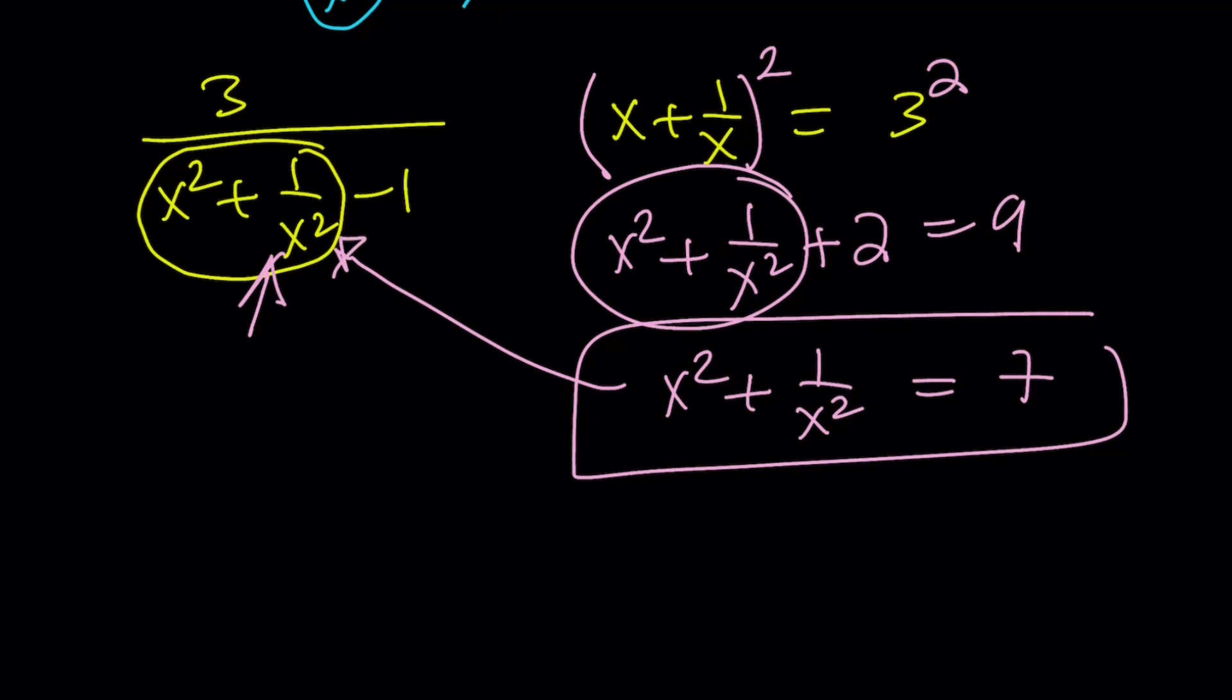So I'm going to replace x squared plus 1 over x squared with 7. 7 minus 1 is 6. 3 over 6 is equal to 1 half. Thank you very much. Case closed. And this brings us to the end of this video.